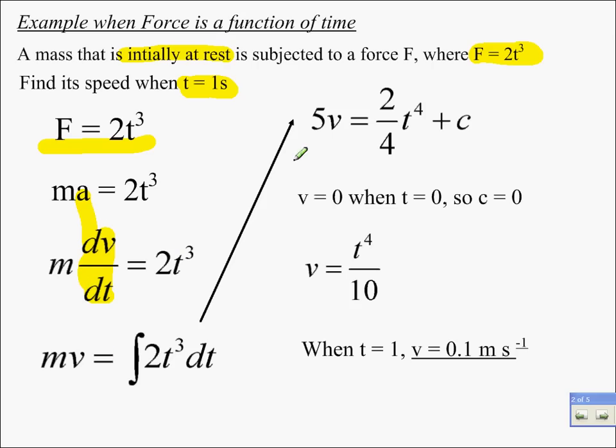and integrate both sides to get 5v is this. Initial conditions tell us t is 0, v is 0, and therefore from this equation here, c is 0, so v is t to the power of 4 divided by 10. When t is 1, that gives us a velocity of 0.1 metres per second.